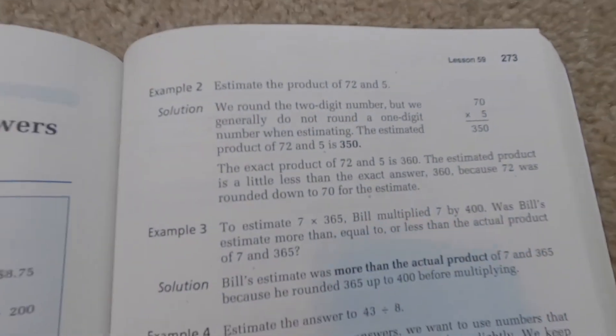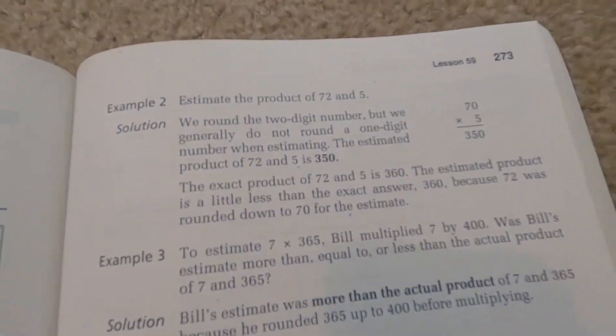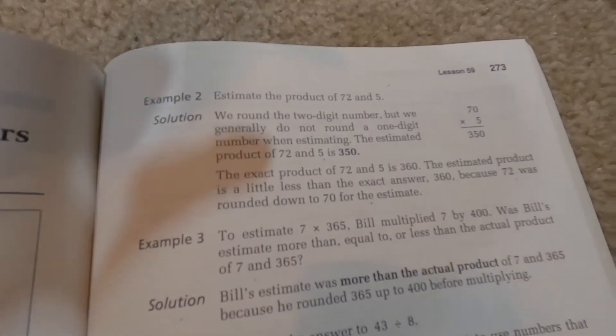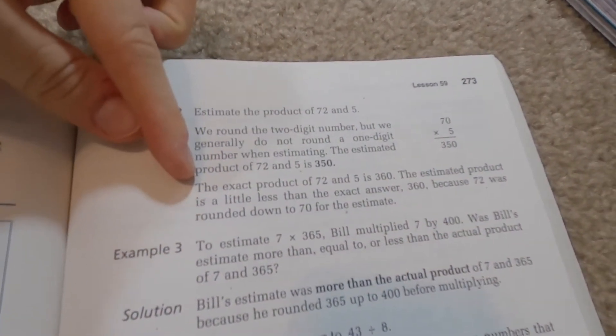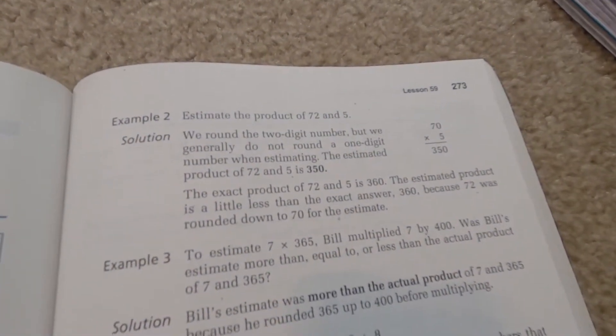So we have a couple more examples to go through. The exact one was larger. So when we rounded down, it became less than the exact number. Our estimated number was less because we rounded down. Does that make sense? Yeah.